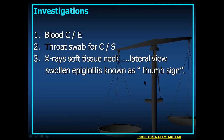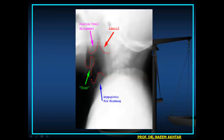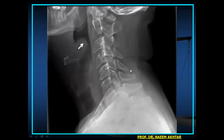Investigations include blood complete examination, throat swab for culture sensitivity, and X-ray soft tissue neck lateral view, which shows a swollen epiglottis known as the thumb sign. This thumb sign on X-ray soft tissue neck lateral view demonstrates the swollen epiglottis.